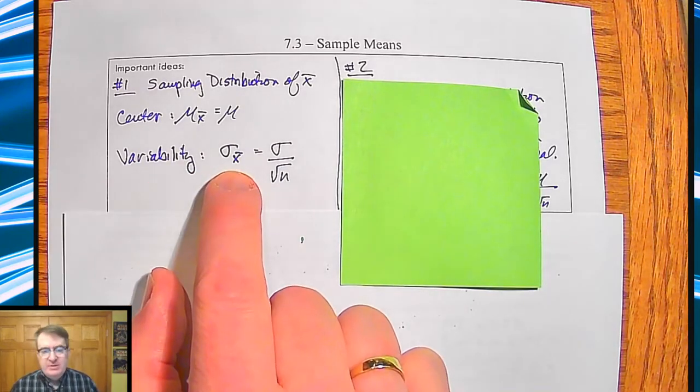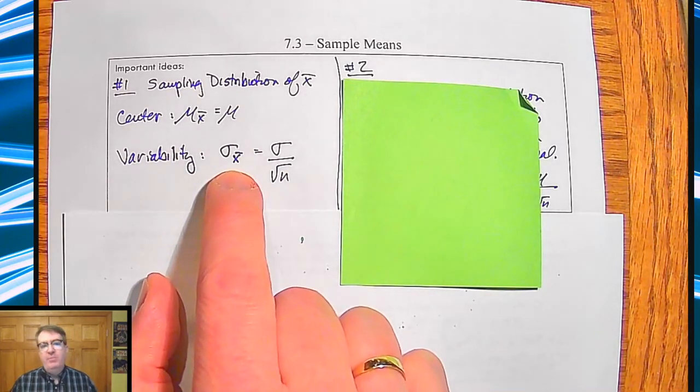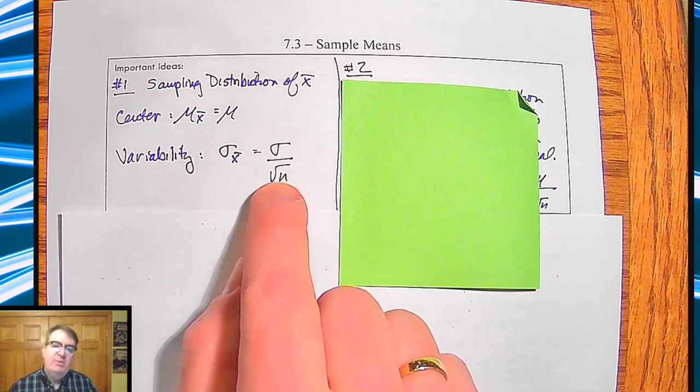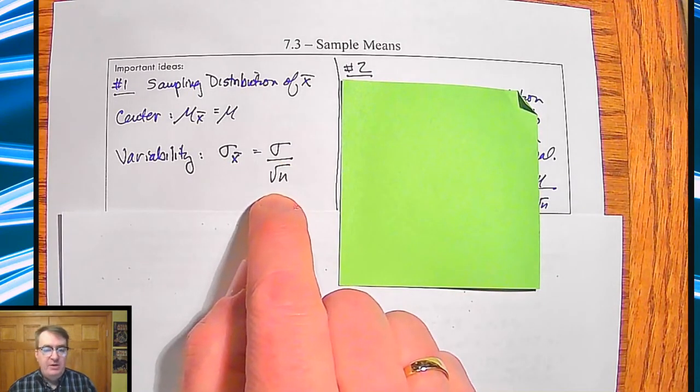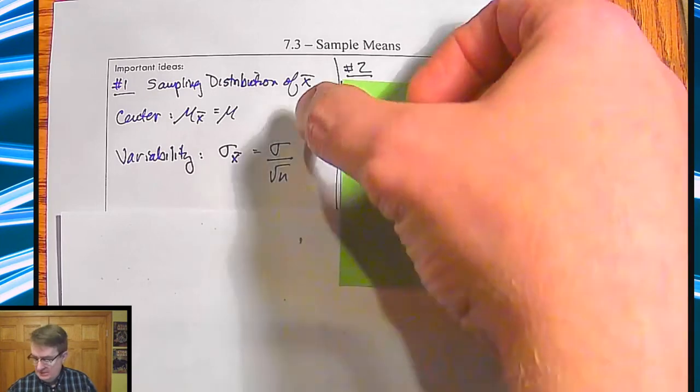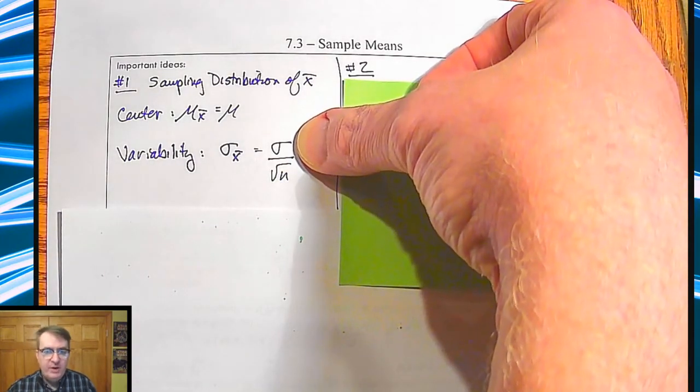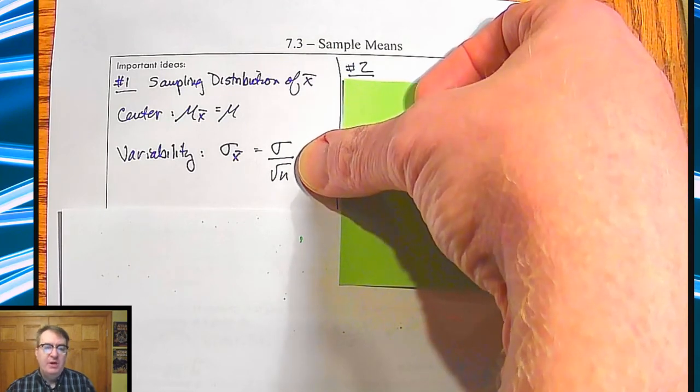And for the variability, what ends up happening is remember how we chatted about how the bigger the size is, the mean is going to shift a little bit. And so what you do is you're going to take the standard deviation of the population and divide it by the square root of n. And part of that's because this is already divided by, or you already have taken the square root of variance. So that's the reason why.